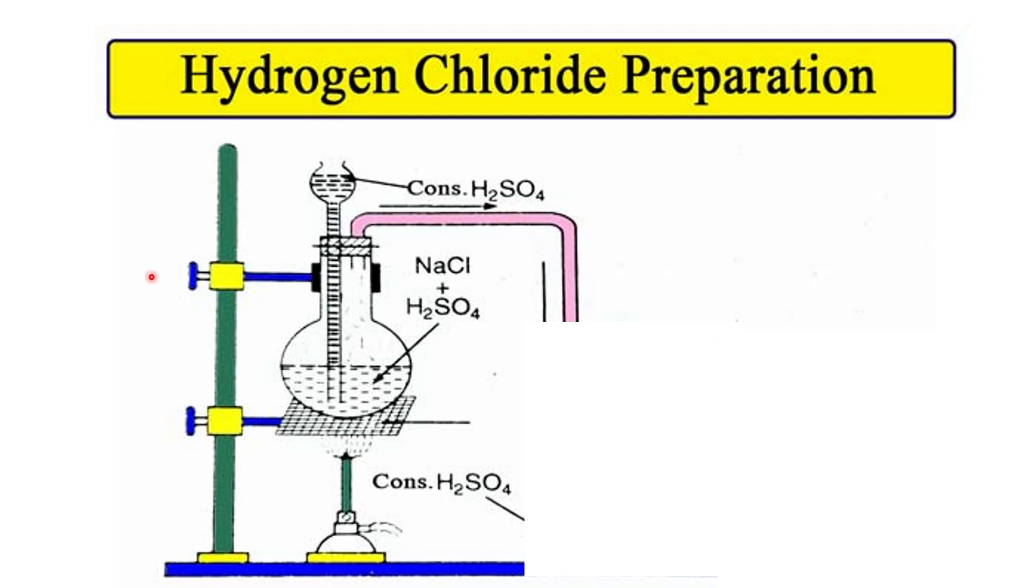So the reactants we are using are sodium chloride and concentrated sulfuric acid. The precaution should be taken that the thistle funnel end should be dipped inside the reaction mixture so that whatever HCl forms should not escape through the thistle funnel. It should come out only through this delivery tube.